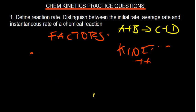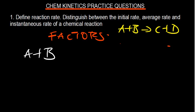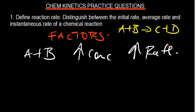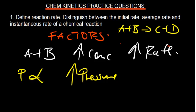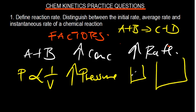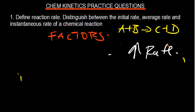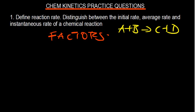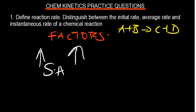Increasing the concentration of reactants increases the probability of particle collisions, leading to an increased rate. For gaseous reactants, increasing pressure reduces volume — in a smaller container with the same number of particles, there are more collisions, so increasing pressure also increases the rate. For solid particles, increasing the surface area leads to more collisions and thus increases the rate of reaction.